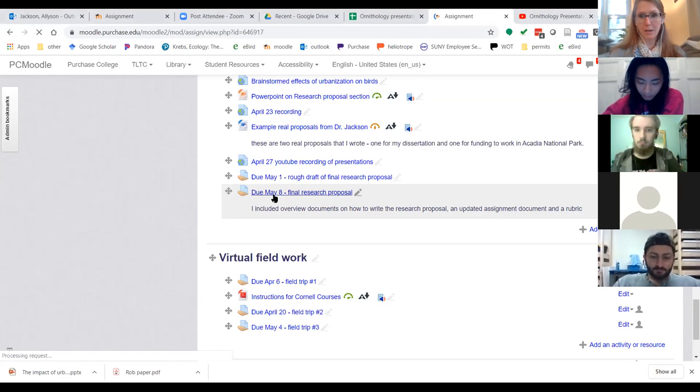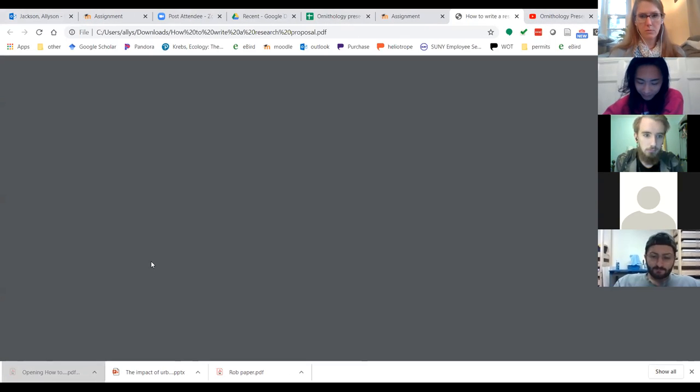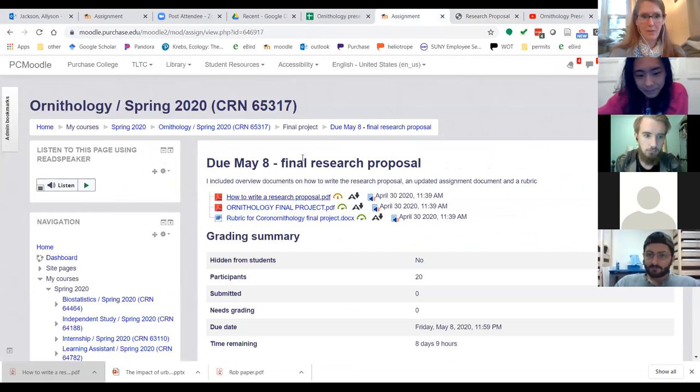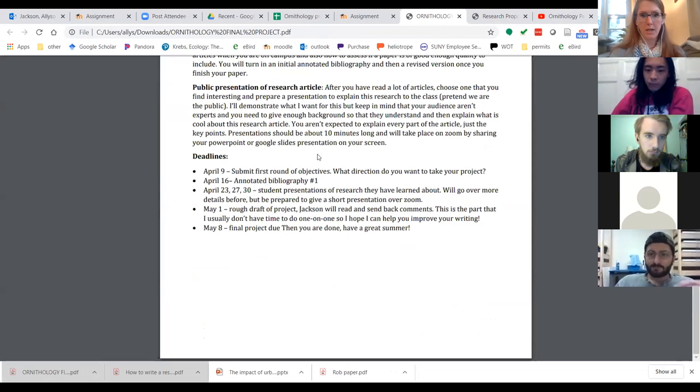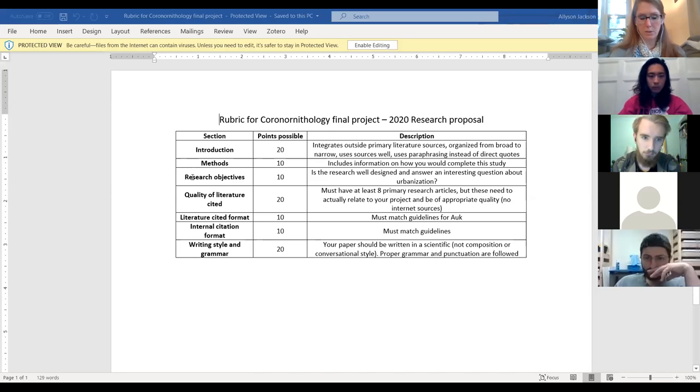The research proposal - to clear up any issues on this final assignment, I put some summary documents. This document has basically what I went over in that PowerPoint. I updated the final project to include what to do. Then I included a rough rubric for the final project so you can see what you'll be graded on. You're doing an introduction, methods, research objectives, and literature cited. There's a lot of points on your writing style, formatting of citations, and quality of literature cited. Any questions?